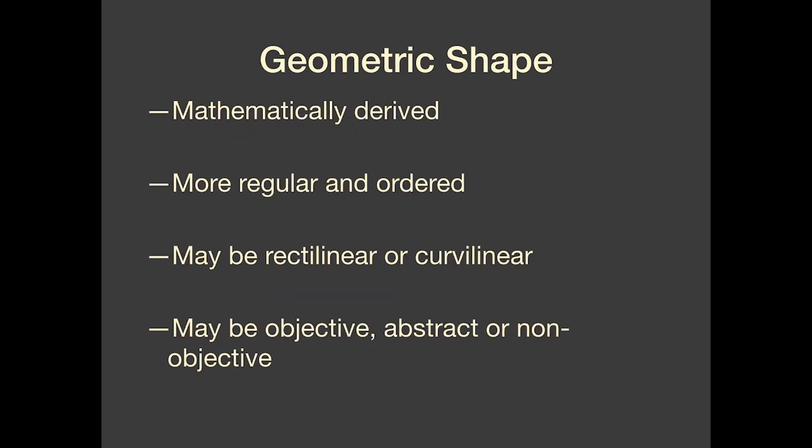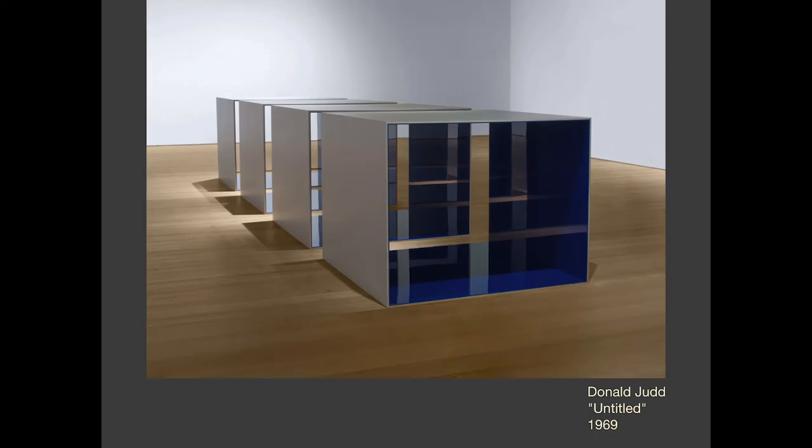Let's start out with geometric shape. This is one of the things that's probably most familiar to us, and when you think of a shape you very likely think of something geometric. What something geometric has is that it is mathematically derived. Because it's based in math, it tends to be more regular and more ordered. It may be rectilinear or curvilinear, and it may also be objective, abstract, or non-objective. The key thing you need to know about geometric shape is that it's mathematically derived. Some examples of sculpture that utilize geometric shape.